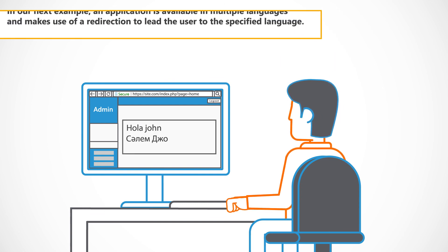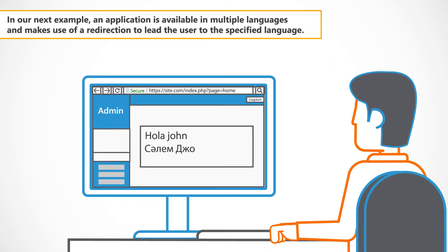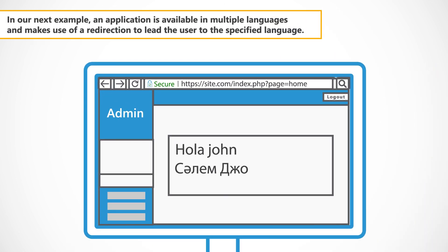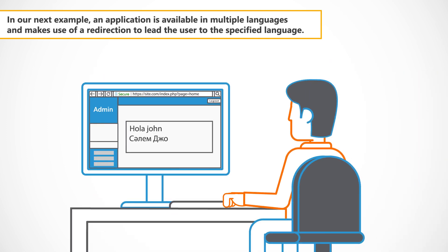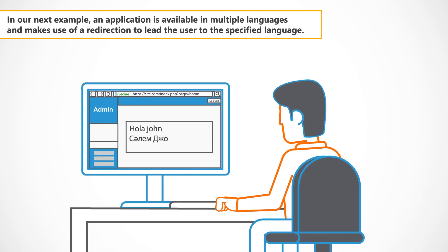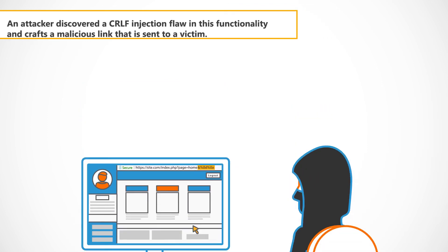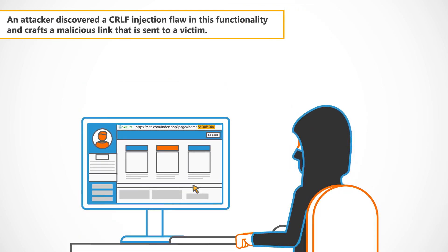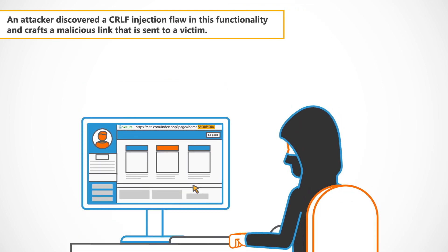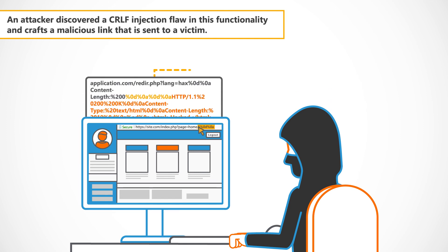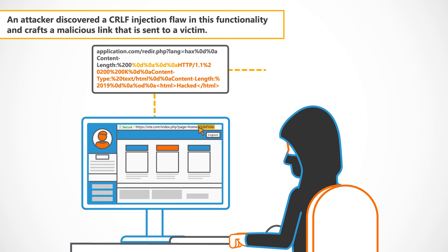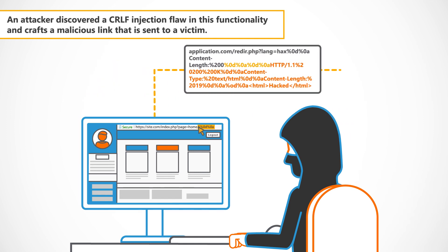In our next example, an application is available in multiple languages and makes use of a redirection to lead the user to the specified language. An attacker discovered a CRLF injection flaw in this functionality and crafts a malicious link that is sent to a victim.